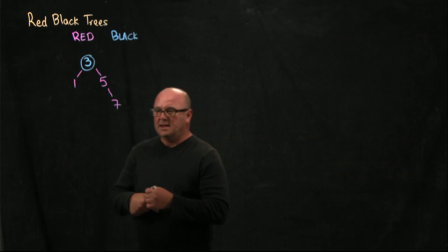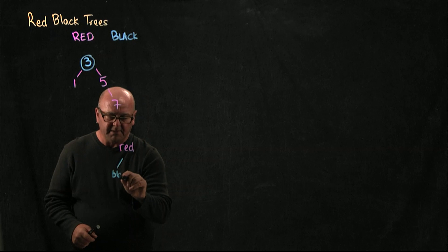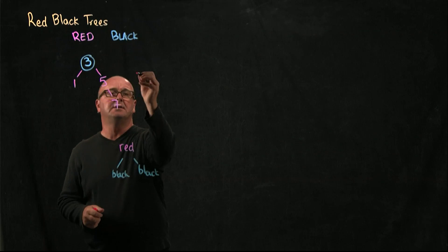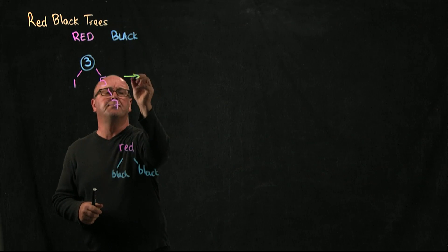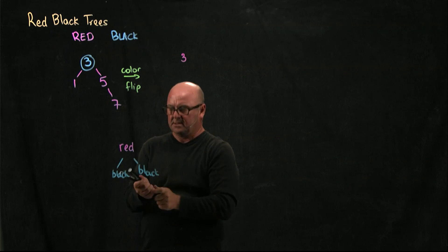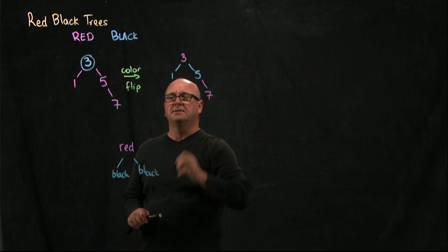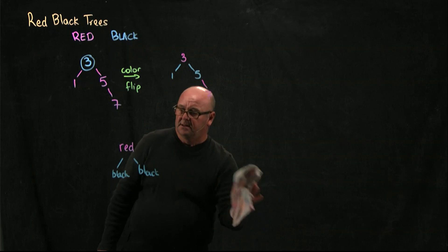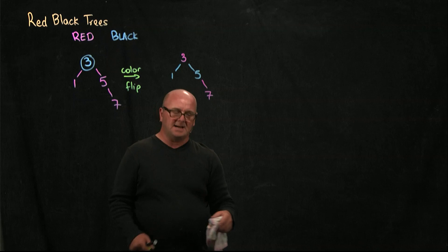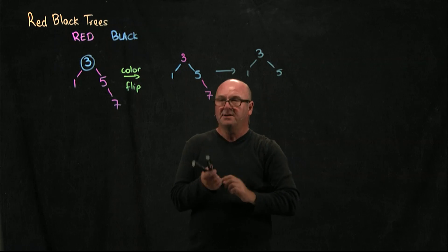Our color flip ends up having the nodes red for the parent, black and black for the children. So when we do a color flip here, we make our 3 red, we make our 1 and our 5 black, and our 7 stays the same. Do we have a valid red-black tree? No, because our root is not black. So let's fix that and make the root black. Now we have 3, 1, 5, and a red 7.